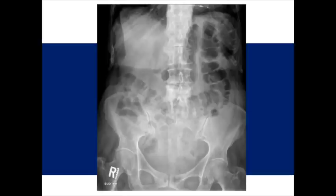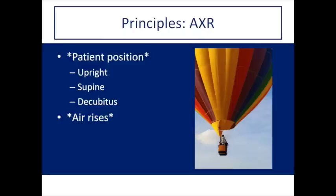Let's start interpreting abdominal x-rays with a question. You're on call, a patient's x-ray comes up, and you're asked: does this patient have free air in the abdomen? Pause and commit to an answer. The first thing you need to know is how the patient is positioned — the main views are upright, supine (patient lying down facing upward), and decubitus (usually lateral decubitus, patient lying on their side). The second thing to know is that air rises. If you're looking for free air, take these two things into account to know where to look.